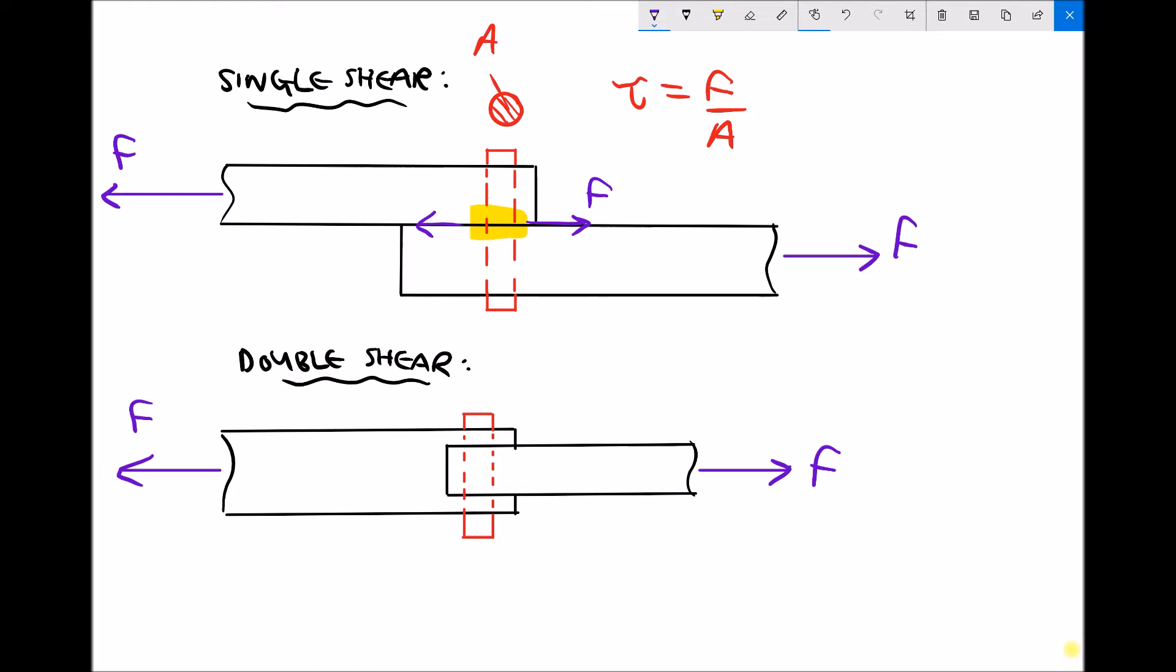The diagram at the bottom is a similar scenario, except this time what we end up with is we end up with two shear surfaces. There is a surface here which is shearing and there is a surface here which is shearing.